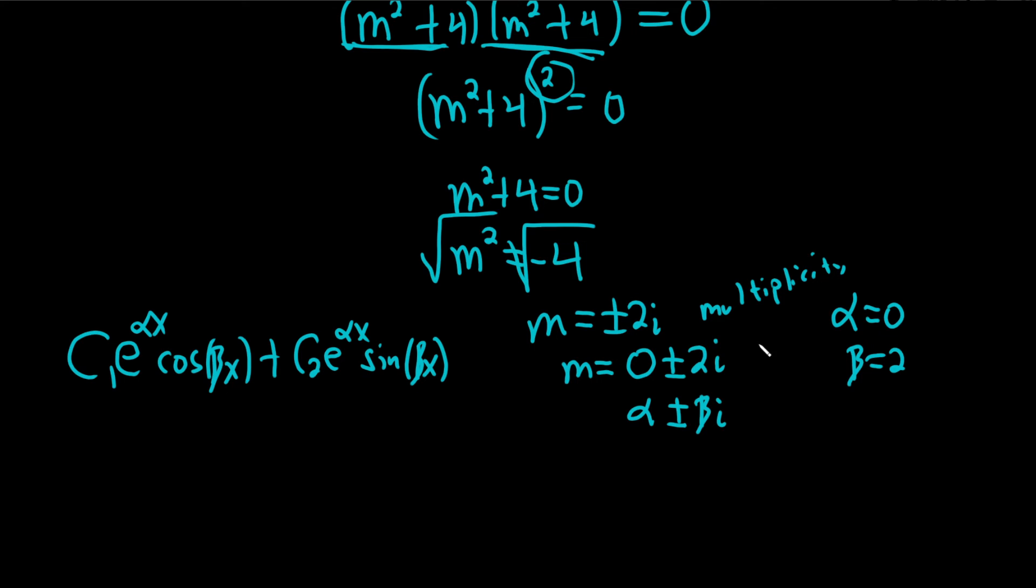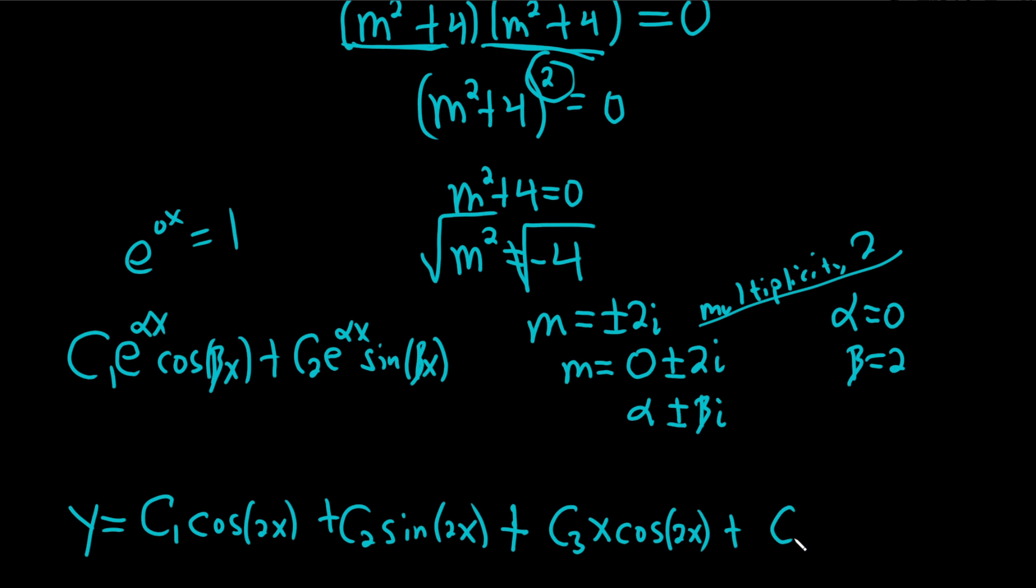So the final answer is y equals, note that e to the 0x is 1. So all the e's are going to go away because alpha is 0. So we'll just get c1 cosine of 2x plus c2 sine of 2x. So this would be the answer if it was multiplicity 1. But because it's multiplicity 2, you have to write it again, and then you have to multiply by x. So it'll be c3x cosine of 2x plus c4x and then sine of 2x.